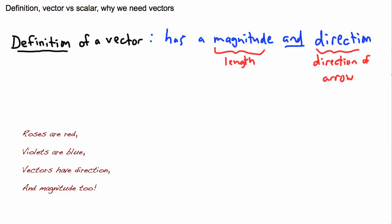A few years ago, near Valentine's Day, I told my students to write a poem or song using physics or math words, because I always thought physics and math don't get enough love. One student wrote this: 'Roses are red, violets are blue, vectors have direction and magnitude too.' So there's your definition right there — vectors have direction and magnitude.